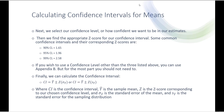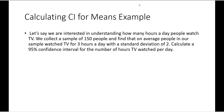If you wish to use a confidence level other than the three listed, you can use Appendix B to look that up, but for the most part you're not going to need to. The most common confidence levels are 90%, 95%, and 99%. Finally, we can calculate the confidence interval, which is generally equal to our mean plus or minus the z-score for our confidence level times the standard error for the sampling distribution.